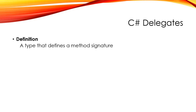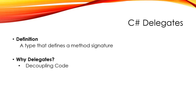A method's signature includes the parameters and the return type for a particular method. Delegates give us the ability to decouple code. Because we have types that are actually method signatures, we can assign methods to them and pass them around just like any other type. This means we can use methods as parameters to other methods — in the functional programming world, these are called higher-order functions.